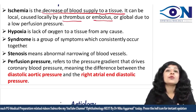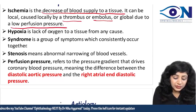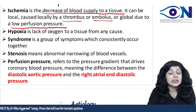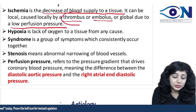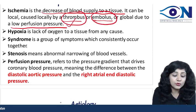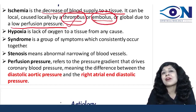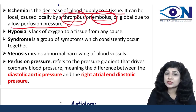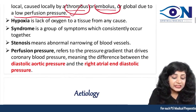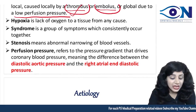Ischemia could also be diffuse at a global level due to low perfusion pressure. So if I'm having ischemia in the eyeball, I need to search for a thrombus, an embolus, or evidence of low perfusion pressure — anything signifying low perfusion pressure in the eyeball.